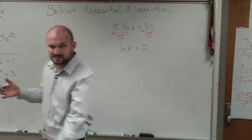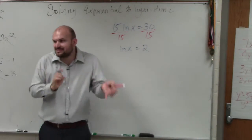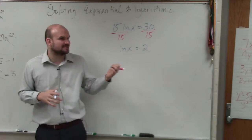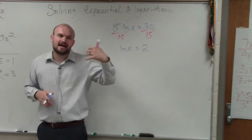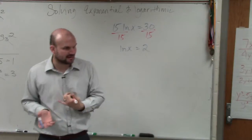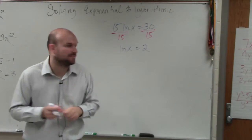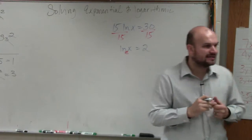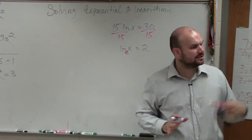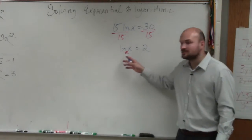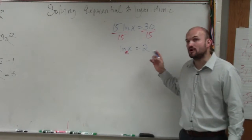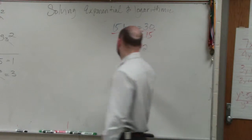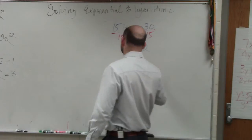Now, to solve for this, we want to rewrite this in exponential form. This gets a lot of students because they see ln and forget why we use ln. We use ln to represent that the base is e. Having a scientific calculator is going to be very helpful for this. If I rewrite this in exponential form, e squared equals x.